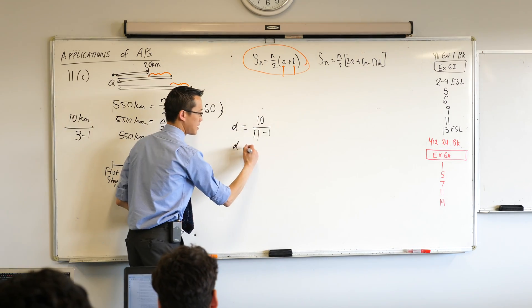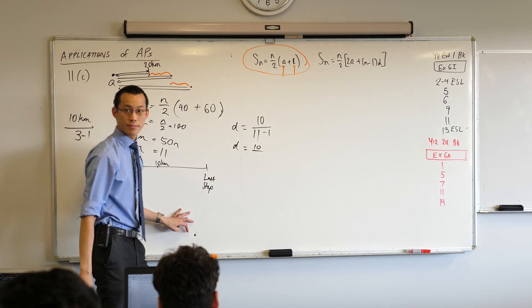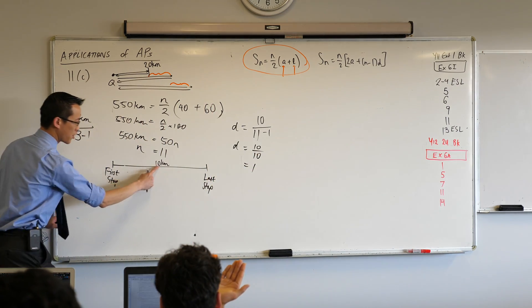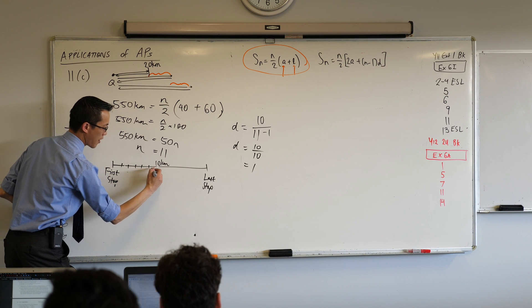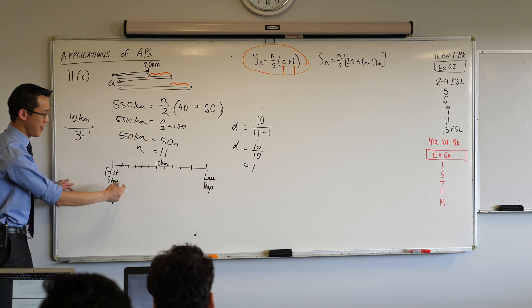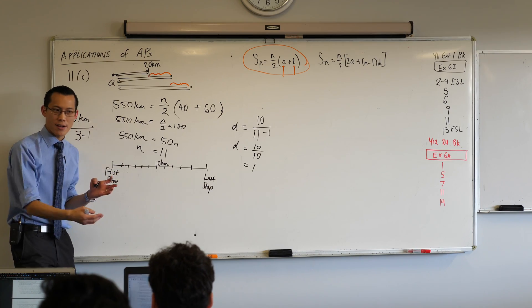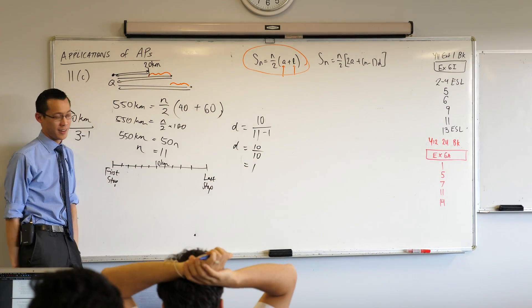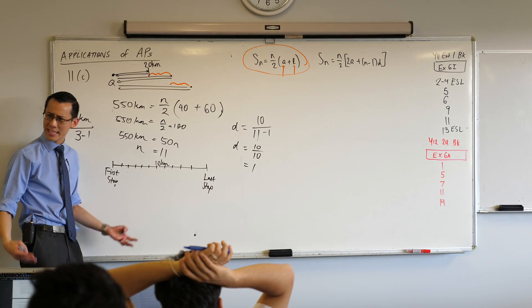So, the common difference is 10 divided by 10, which of course makes sense. Because look, if I've got 1, 2, 3, 4, 5, 6, 7, 8, 9, 10, 11 stops, each one, the gap, there are 11 stops and 10 gaps between them. The gap is what you're actually interested in. That's the one kilometre. Does that make sense?